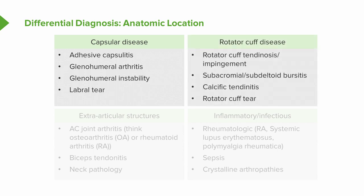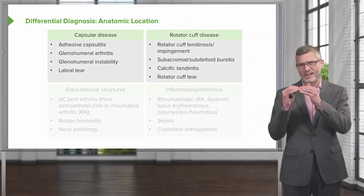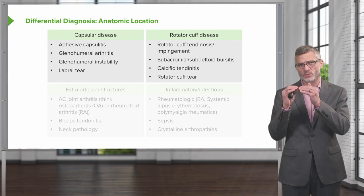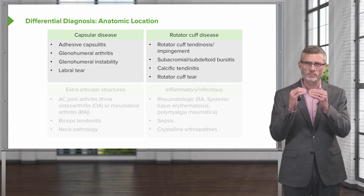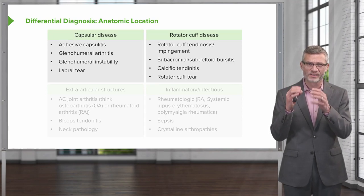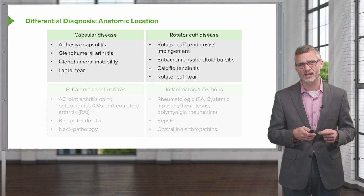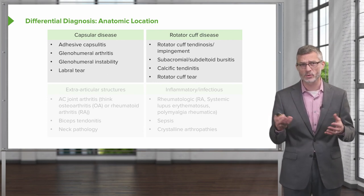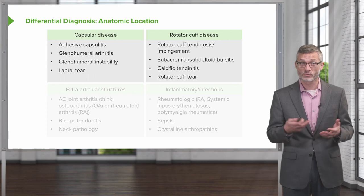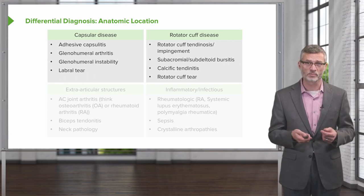Next is disease of the rotator cuff — maybe tendinosis, maybe impingement, or problems with the subacromial or subdeltoid bursa that gets inflamed due to too much stress in that very tight area. Calcific tendonitis can occur with those tendons, and of course you could also have a complete tear.